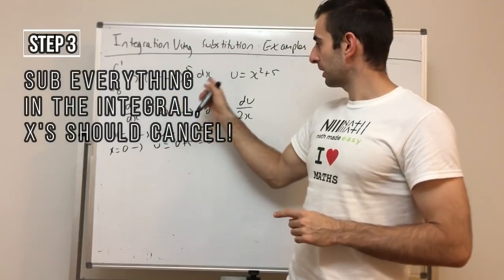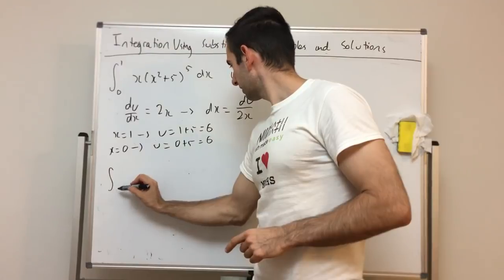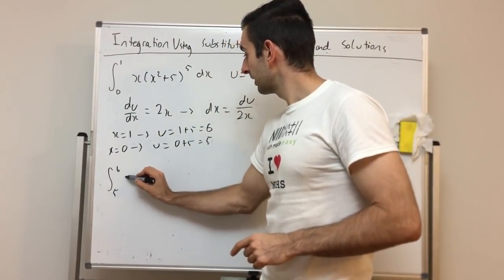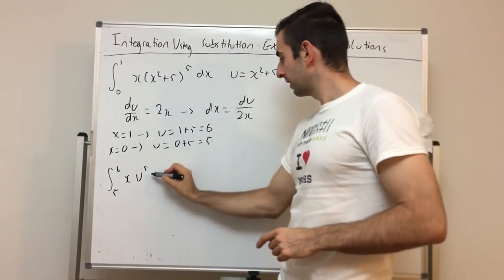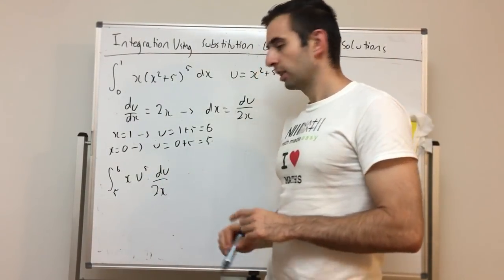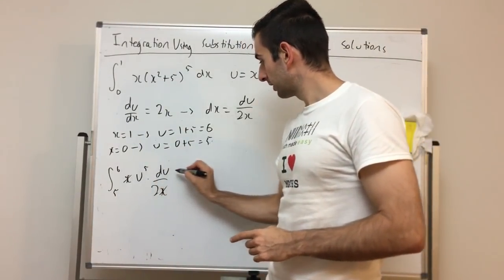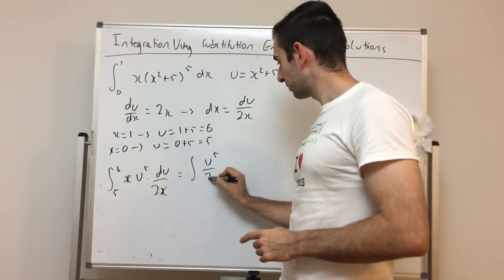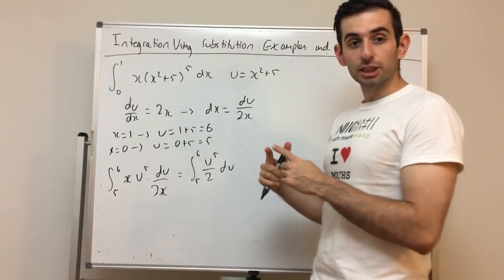Step three: substitute everything — bounds, u, and dx. The bounds are now 5 to 6. x(x² + 5)⁵ becomes x · u⁵, and dx becomes du / 2x. So the x's cancel out, and we're left with the integral from 5 to 6 of u⁵ / 2 du.